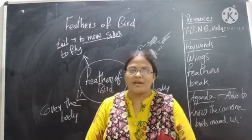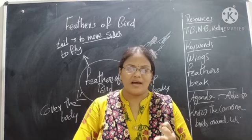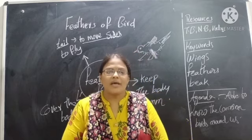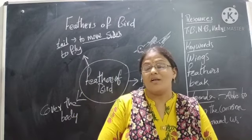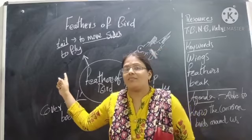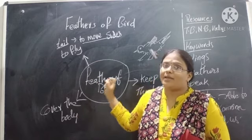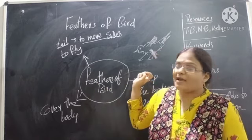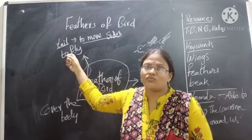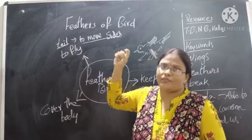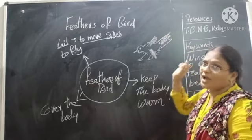We can also identify the bird because feathers vary in their size, shape, and color. We have learned each. Now tell me, how do feathers help the bird? They help to fly. They cover the body. And they keep their body warm. Mainly the tail part helps the bird to move in a direction.